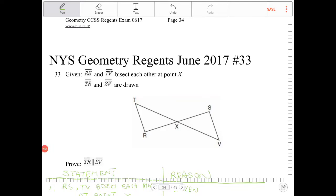Given RS and TV bisect each other at point X, TR and SV are drawn.